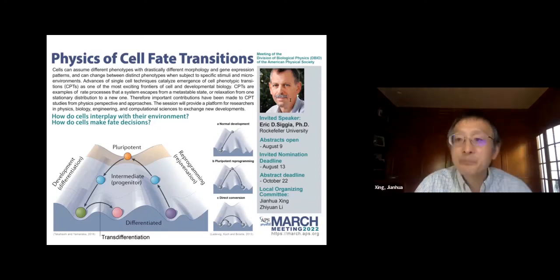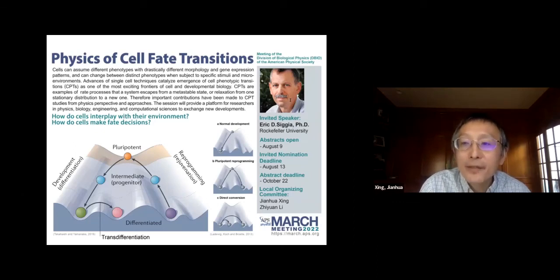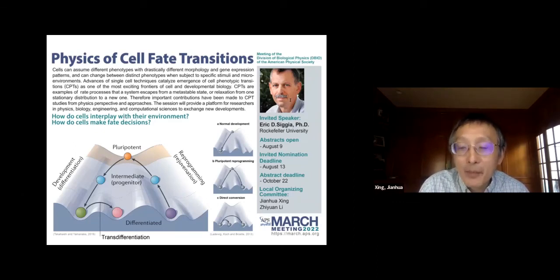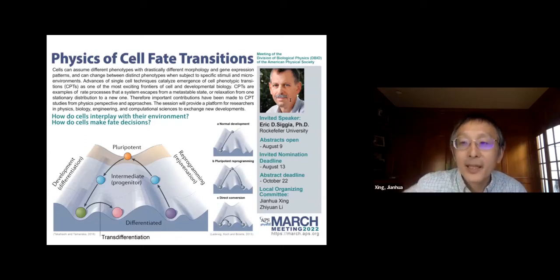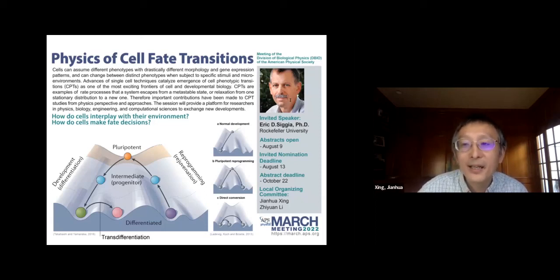So as I mentioned, when we do time-lapse imaging, we have morphology quantified using the active shape model — that gives us the shape representation — and then the hierarchical texture features. Those are the original parameters we use to define the reaction coordinates.